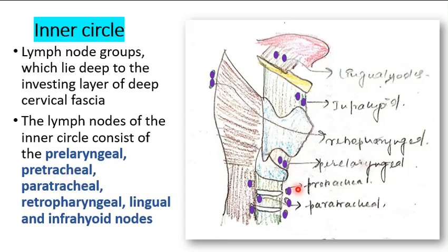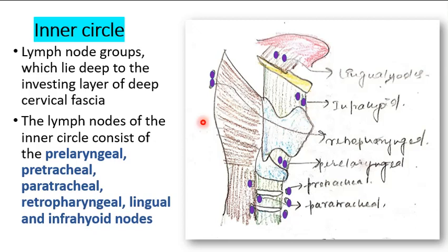The pre-tracheal lymph nodes lie in front of the trachea, above the isthmus of the thyroid gland. The paratracheal lymph nodes are present on either side of the esophagus and trachea. The retropharyngeal lymph nodes are present in the retropharyngeal space, between the posterior wall of the pharynx and the pre-vertebral fascia. Finally, we have the lingual nodes on the hyoglossus muscle and the infrahyoid nodes on the thyrohyoid membrane. This completes our inner circle: pre-laryngeal, pre-tracheal, paratracheal, retropharyngeal, lingual, and infrahyoid.